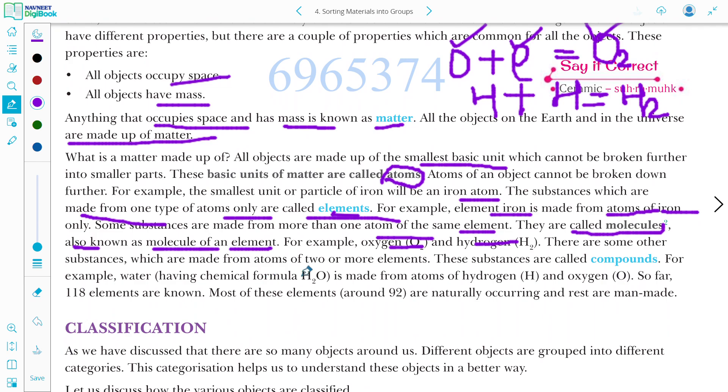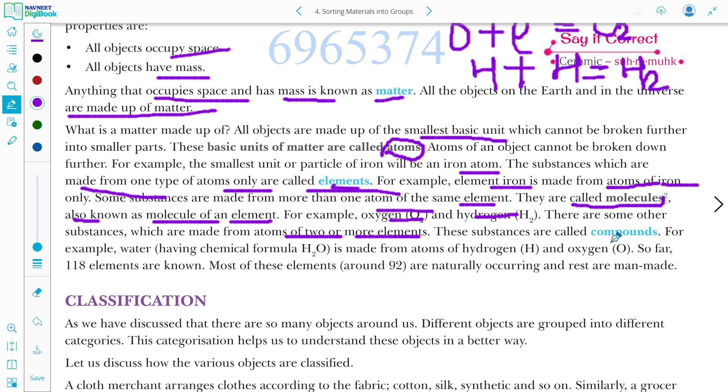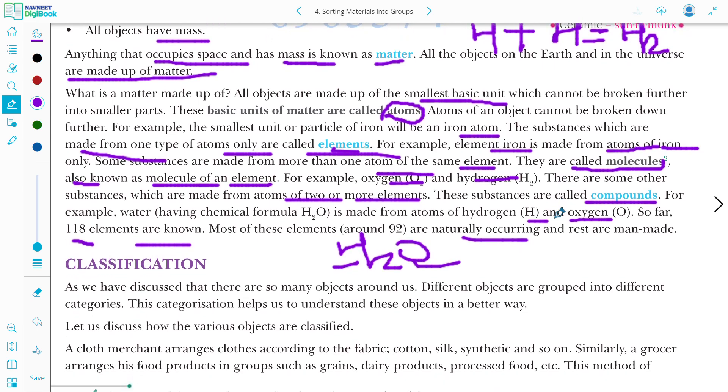There are some other substances which are made from atoms of two or more elements. If something is made from two or more elements, then we call that substance a compound. For example, H2O. H2O has two different atoms in it - two atoms of hydrogen and one atom of oxygen. So this becomes a compound. For example, water having chemical formula H2O is made from atoms of hydrogen and oxygen. So far, how many elements are known? 118 elements are known. Almost 92, it means around 92 elements are naturally occurring elements, while the rest are man-made elements.